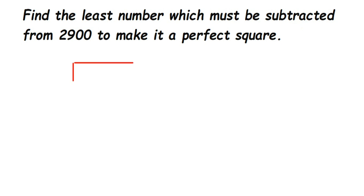We have 2900 as the number inside the division. The first step is to start pairing up digits from the extreme right. The two zeros form one pair, and 29 forms another pair. This pairing step is always the very first step when finding a square root using this method. The second step is to find a divisor.